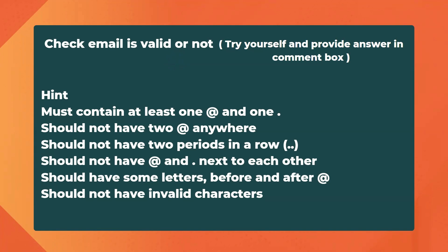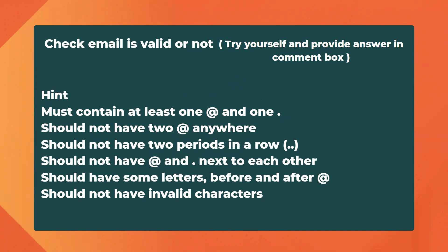After this question, a counter question was asked by the panel: check whether an email is valid or not. I encourage you to try it yourself and post your answer in the comments. Here is a hint — to validate an email ID, you need to follow certain rules. The email must contain at least one '@' and one dot. It should not have two '@' symbols — an email can only have one. It should also not have two consecutive dots.